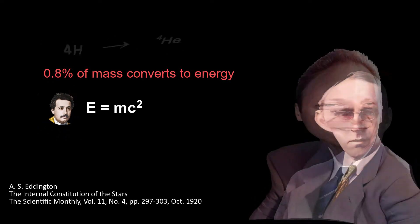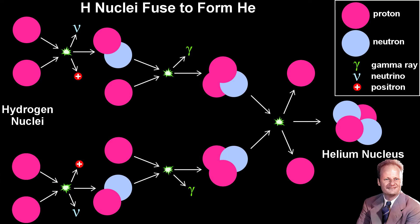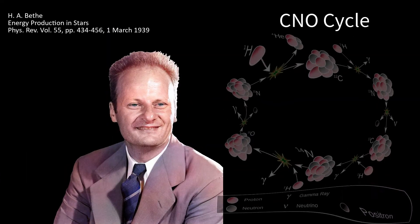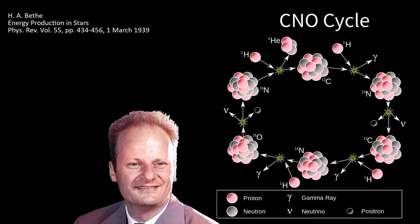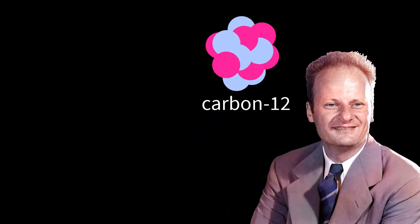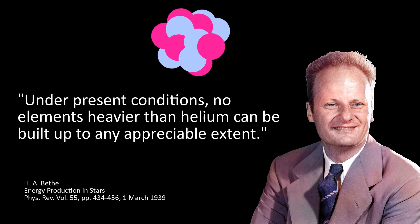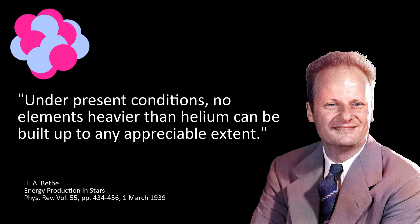In 1939, Hans Bethe filled in the details of the proton-proton chain reaction, explaining how the Sun gets energy by fusing hydrogen into helium. He also unveiled the CNO cycle, which explained how massive stars convert hydrogen to helium. Although Bethe's CNO cycle relied on the existence of carbon, he had a problem. He couldn't find any reasonable way that elements heavier than helium could be made.